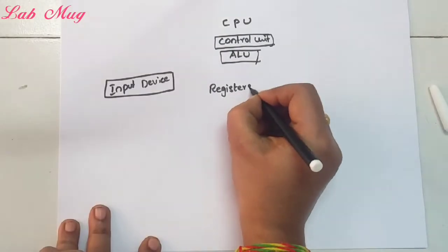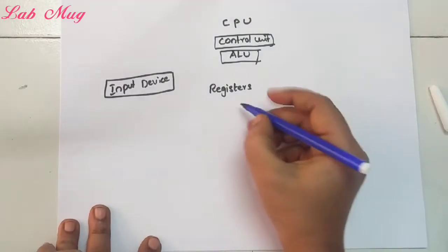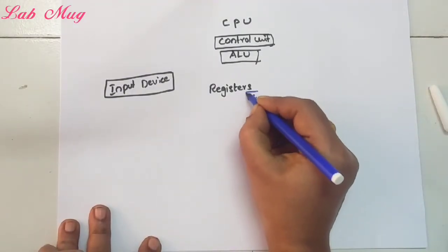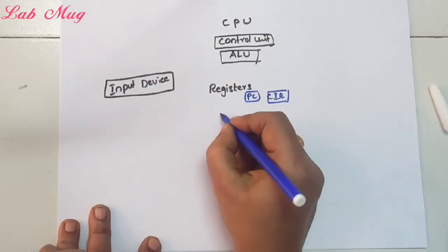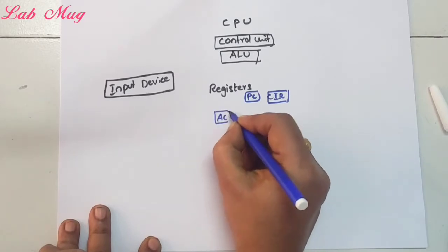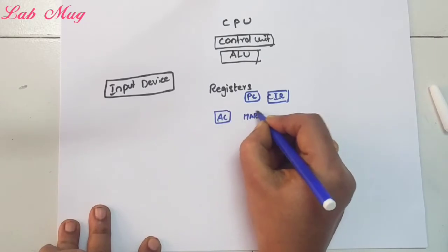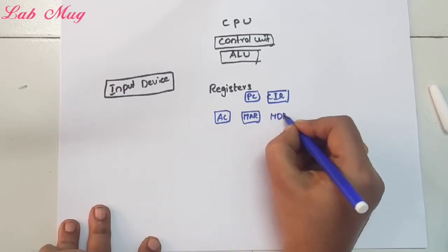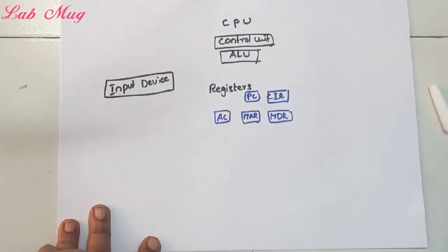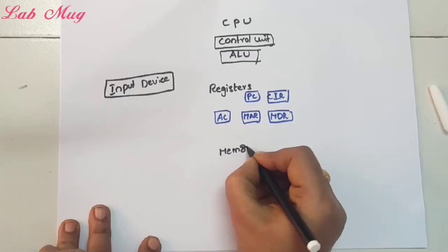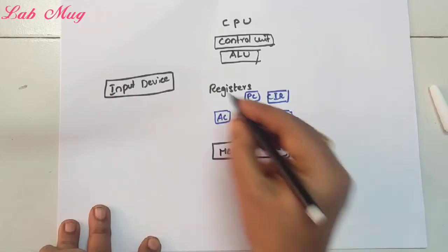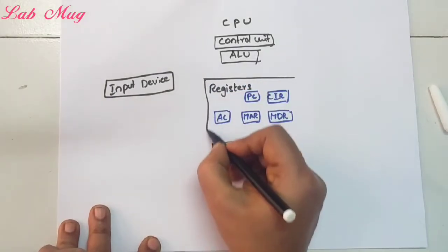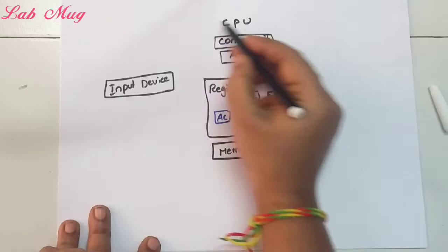The registers we discussed previously in the basic computer structure include: program counter (PC), current instruction register (CIR), accumulator (AC), memory address register (MAR), and memory data register (MDR). These are the registers. Memory unit is also one part of this structure.